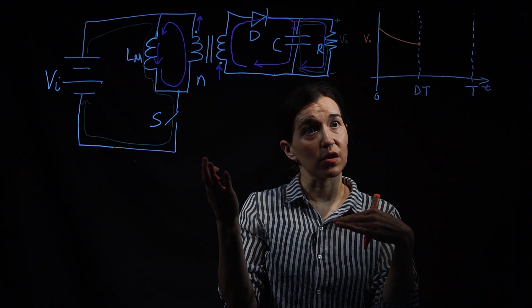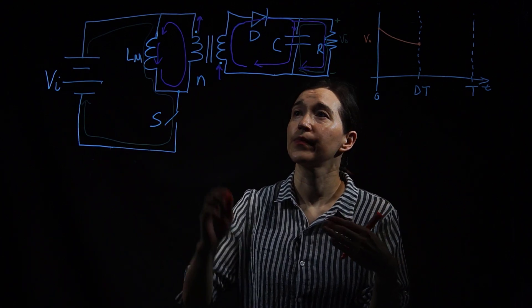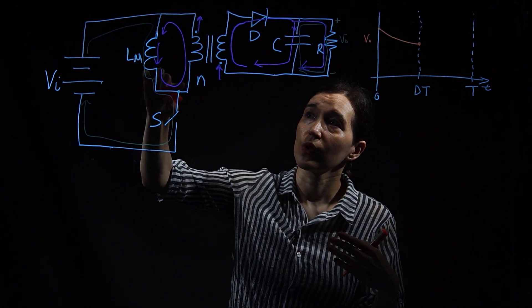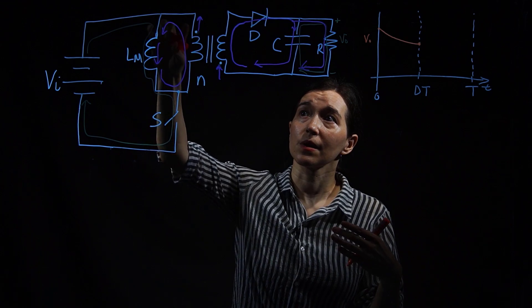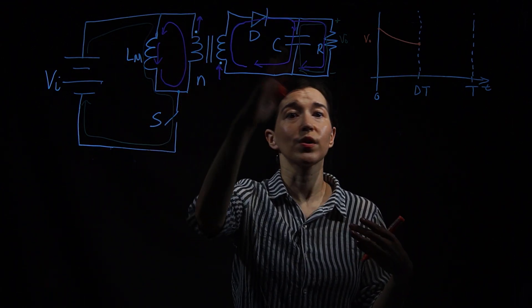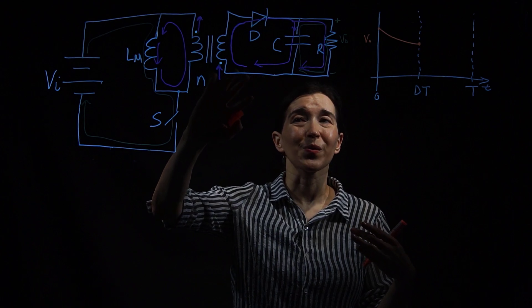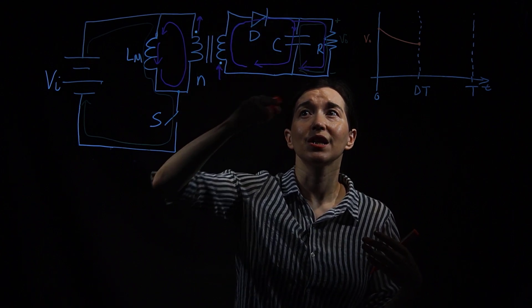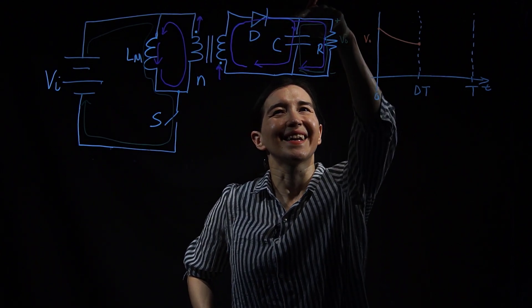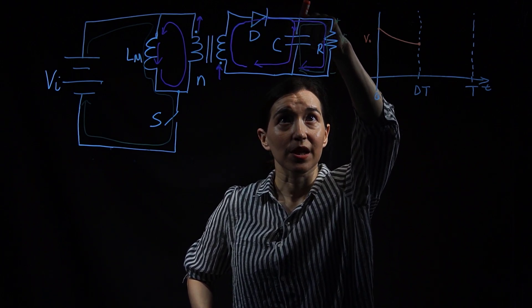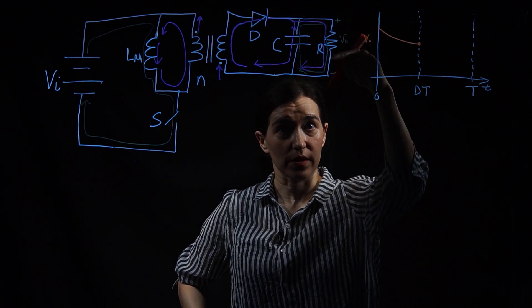At DT we're going to switch the modes. This switch is going to turn off. The current was going through the inductor. It's going to keep going through that inductor and then go through the ideal transformer part and go into this purple one. It is charging up the capacitor here and also going through the resistor here.